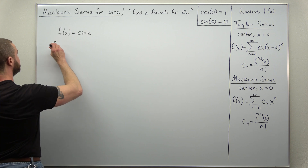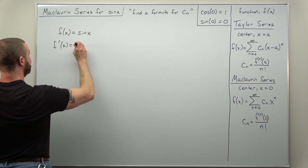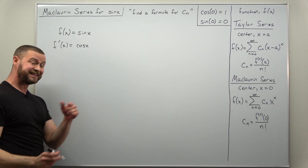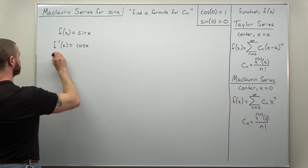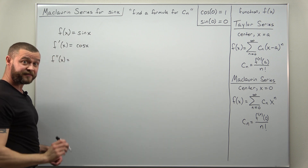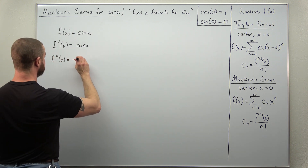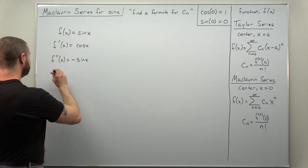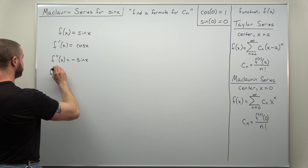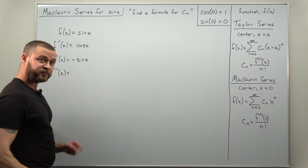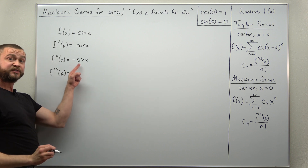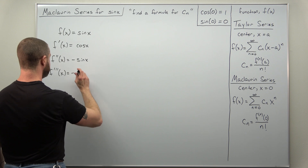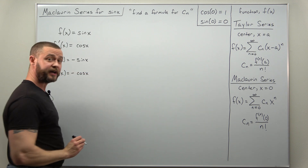The first derivative — the derivative of sine — that's cosine of x, so pretty straightforward. We're going to differentiate that again to get the second derivative, and the derivative of cosine of x is negative sine of x. We're going to differentiate that yet again to get the third derivative — just be careful with your signs. Sine of x differentiates to cosine of x, and that negative will stay, so we get negative cosine of x.